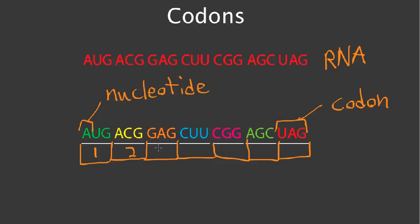What happens is all the codons put together code for a protein. All of the amino acids put together create a protein.